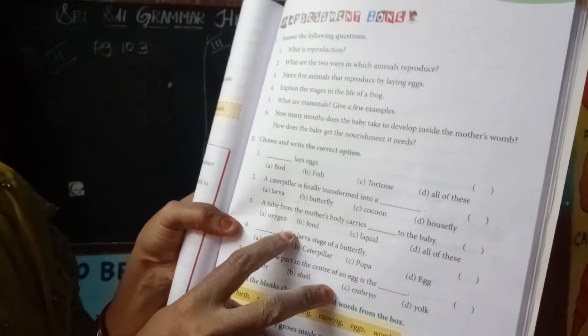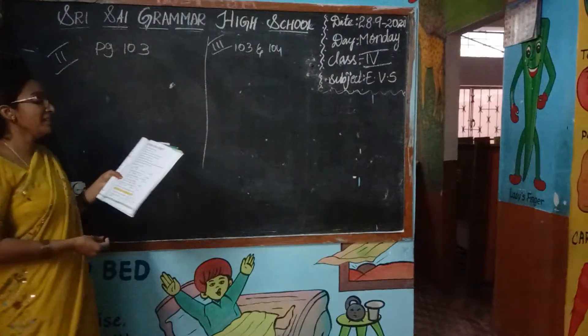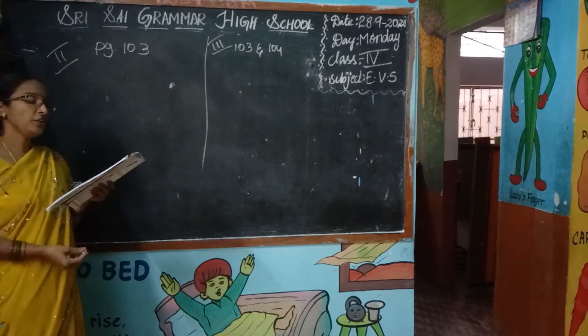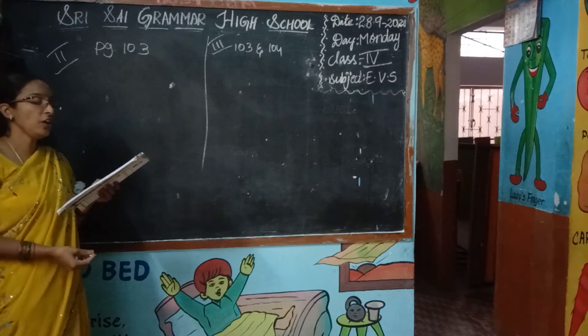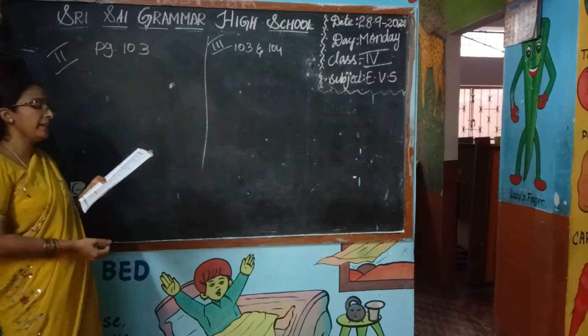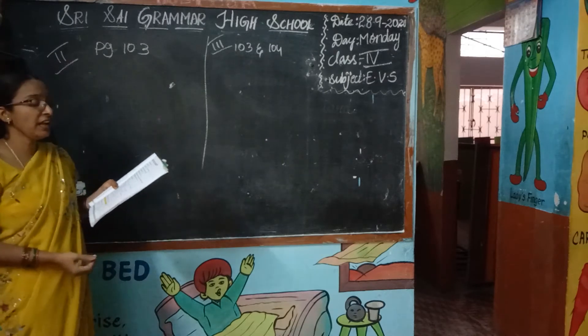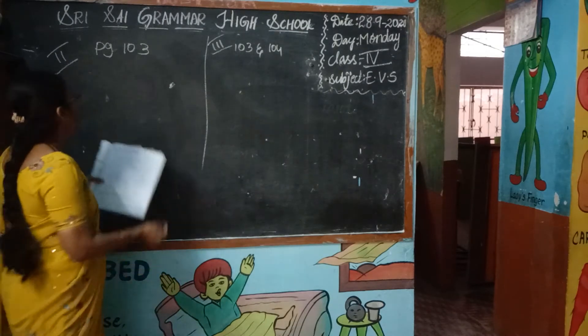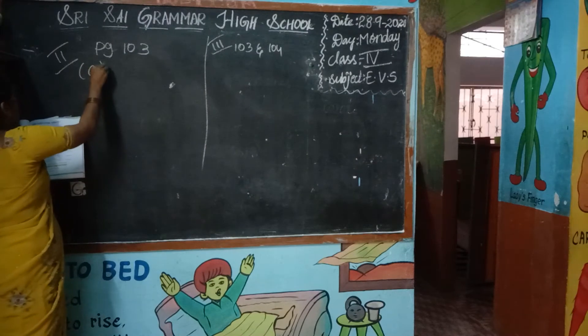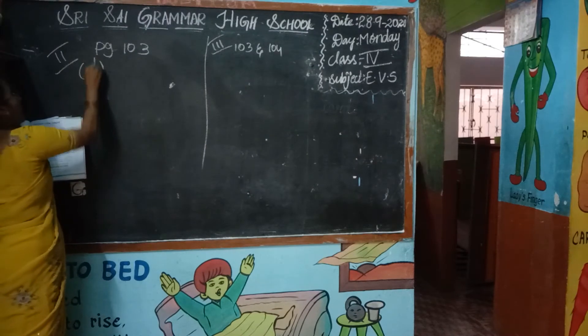Choose the correct answer, correct option and write in the blank. What is the first one — that lays eggs? Bird, fish, tortoise — all of them lay eggs. Birds lay eggs, fish lay eggs, tortoise also lay eggs. So I am going to write D in the bracket.